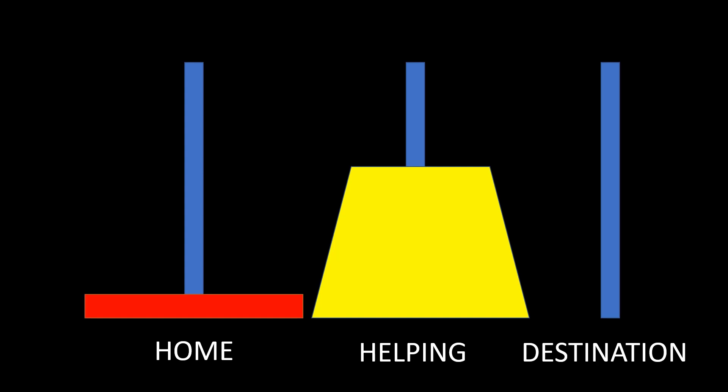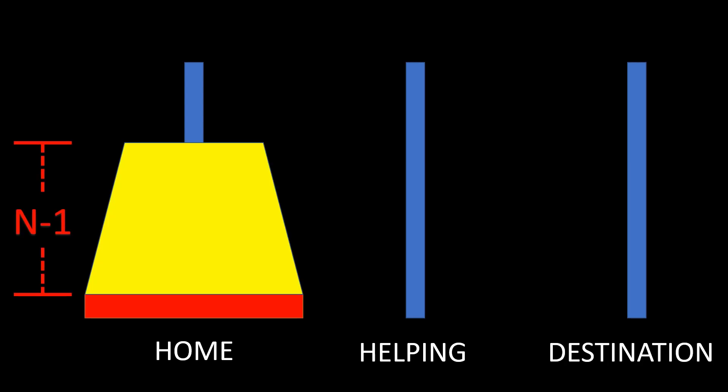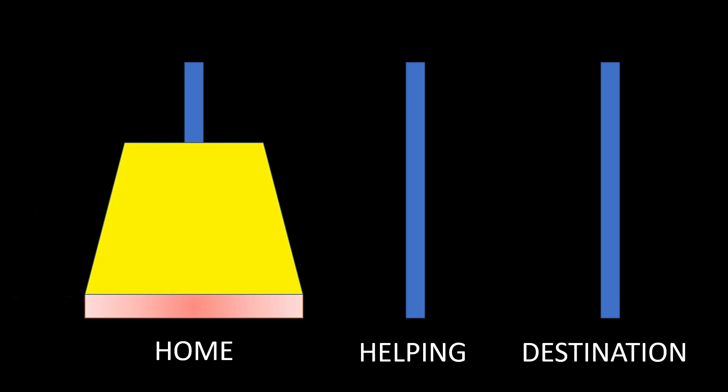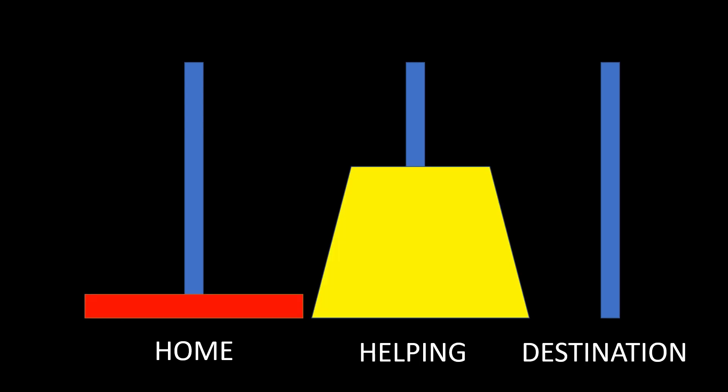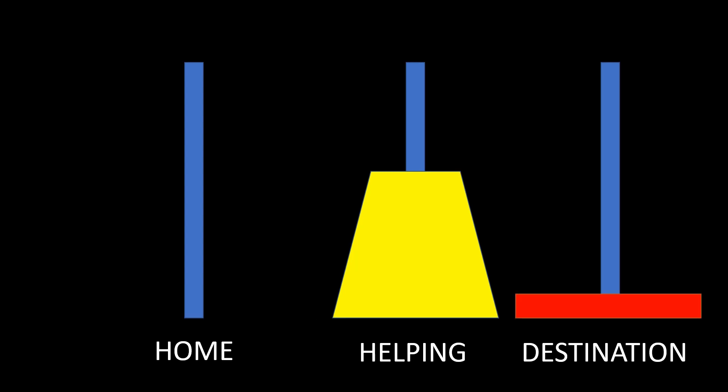Moving all n minus one disks to the helping stack frees the largest disk and leaves the destination stack empty for it to move there. For the first part, we use the general solver to move only the top n minus one disks to the helping stack. We can ignore the last disk because sitting at the bottom of the home stack, it won't affect the movements of the smaller n minus one disks. It is also important to notice that we change the roles between the middle and the right stack before asking the function to solve our problem.